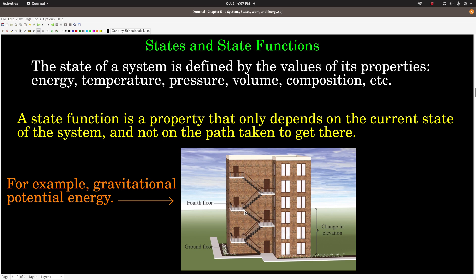Now it doesn't matter how we get there. We could just climb up these stairs and we would have a certain amount of gravitational potential energy on the fourth floor. Or we could run around the building 20 times, jump up and down, and then run up the stairs to the fourth floor. It took us a lot more energy to get up there, but we still have in the end the same gravitational potential energy. So that's an example of a state function.